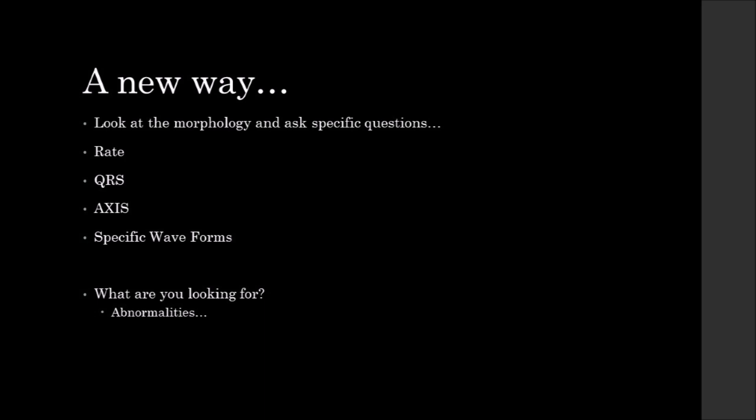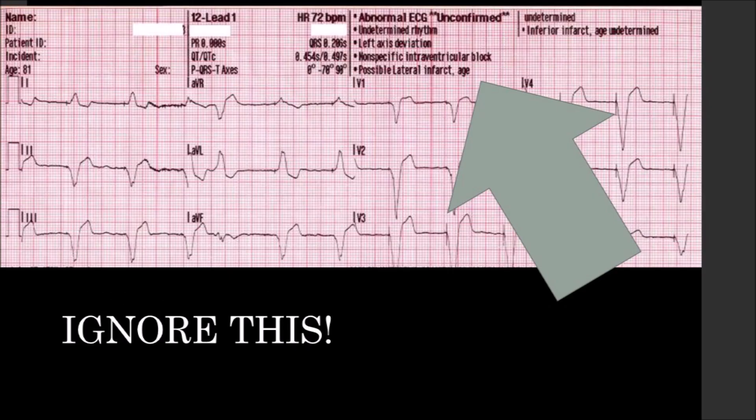Let's have a look at this EKG. This is a wide complex rhythm — we can see some pacer spikes in it, so we know pretty quickly this is a paced rhythm. But let's analyze it this new way. Do we see any specific crazy morphology? Yes. Just a general impression of the morphology shows us this is a heart that is malfunctioning in some way. Whether it's acute or whether it's planned, we don't really know yet — we're just looking for an abnormality.